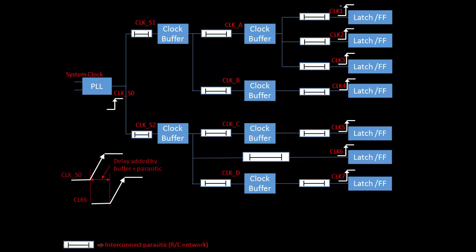The second thing is the time difference or delay between two clock destinations — like between CLK-1 and CLK-4, or CLK-1 and CLK-2. That is known as clock skew. The difference between destination clocks — CLK-1 vs CLK-2, CLK-1 vs CLK-3, CLK-1 vs CLK-5, CLK-1 vs CLK-7 — that difference between these destination points is clock skew.